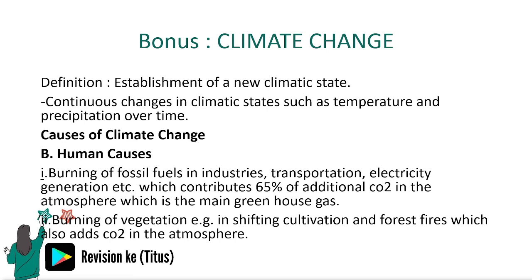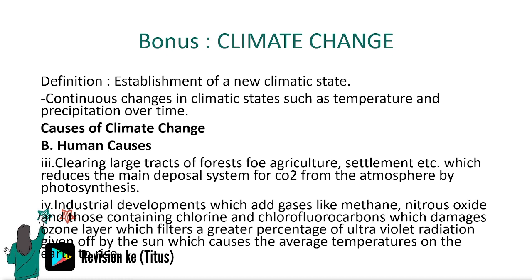The human causes of climate change include: burning of fossil fuels in industries, transportation, and electricity generation, which contributes 65% of additional carbon dioxide in the atmosphere — the main greenhouse gas; burning of vegetation, which also adds carbon dioxide to the atmosphere; clearing large tracts of forest for agriculture and settlement, which reduces the main disposal system for carbon dioxide through photosynthesis; and industrial developments adding gases like methane, nitrous oxide, and chlorofluorocarbons which damage the ozone layer, reducing filtration of ultraviolet radiation and causing average temperatures to rise.